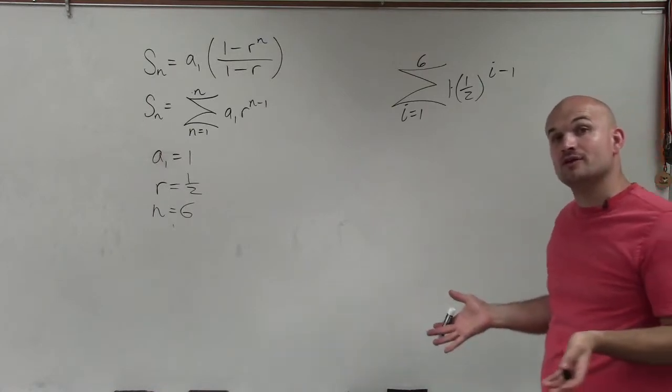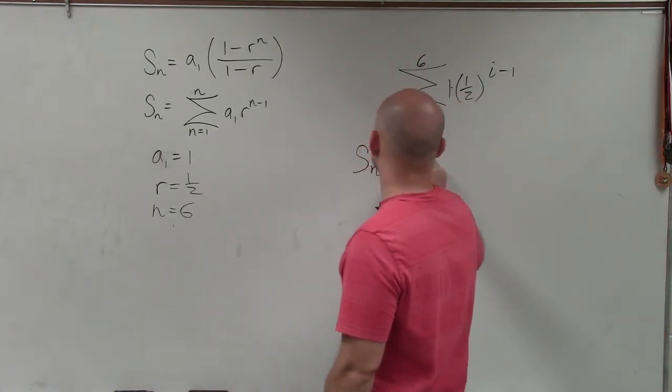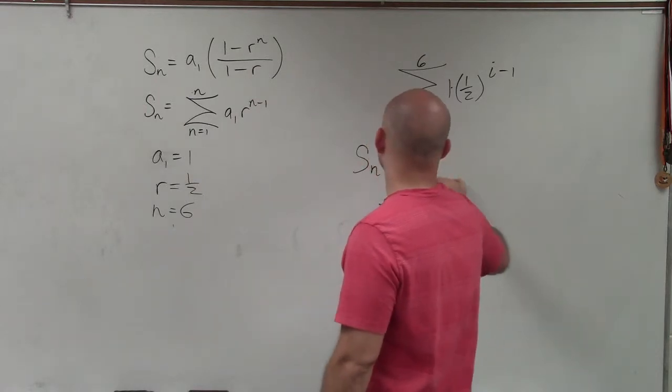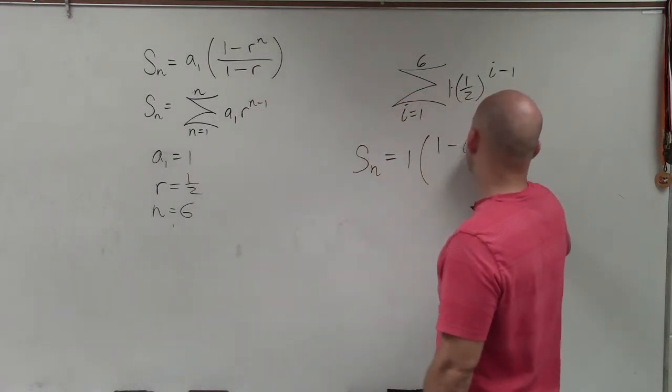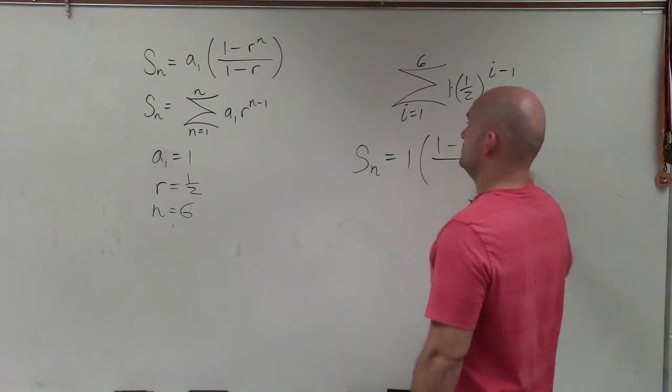So now that I know all the information, I'm just going to plug it into my formula. So the sum of n terms is going to equal a sub 1, which is 1, times 1 minus my r, which is 1 half, raised to the sixth power, divided by 1 minus 1 half.